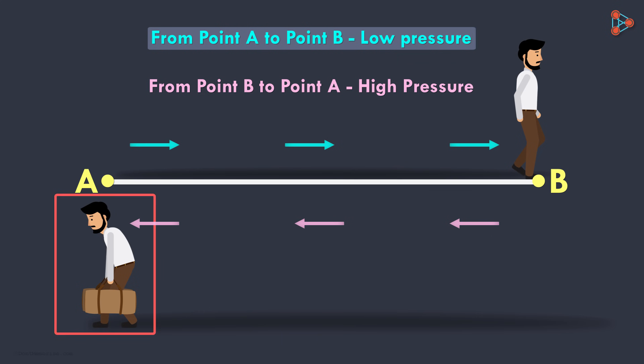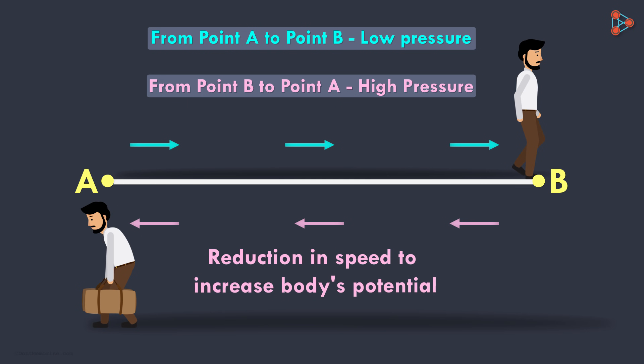While in this case, you need to carry some additional weight while moving from point B to point A. So you automatically reduce the speed to increase the potential of your body to carry more weight.